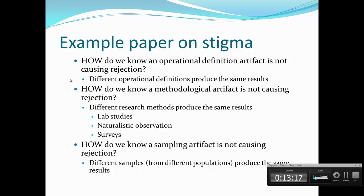How do we know a methodological artifact is not causing rejection? Because we've used different research methods and they produce the same results. If you do a lab study on stigma and rejection, a naturalistic observation, or a pencil-and-paper survey, you all find the same thing. So it doesn't matter which research method we use — we still get the same result. That makes us feel it's not an artifact due to using a laboratory study, because we find the same thing in naturalistic observations and surveys.